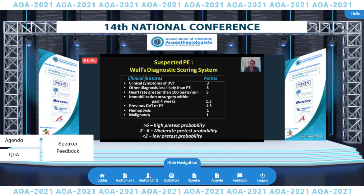When you suspect pulmonary embolism, it is very difficult to diagnose unless you have a system of clinical substantiation done by various scoring systems. One commonly used diagnostic scoring system assigns points for clinical features predisposing to DVT or thromboembolic conditions: clinical symptoms of DVT, other diagnosis less likely than PE, heart rate greater than 100, immobilization or surgery within last four weeks, previous history, hemoptysis, and malignancy. A probability of pulmonary embolism is determined depending on the score.